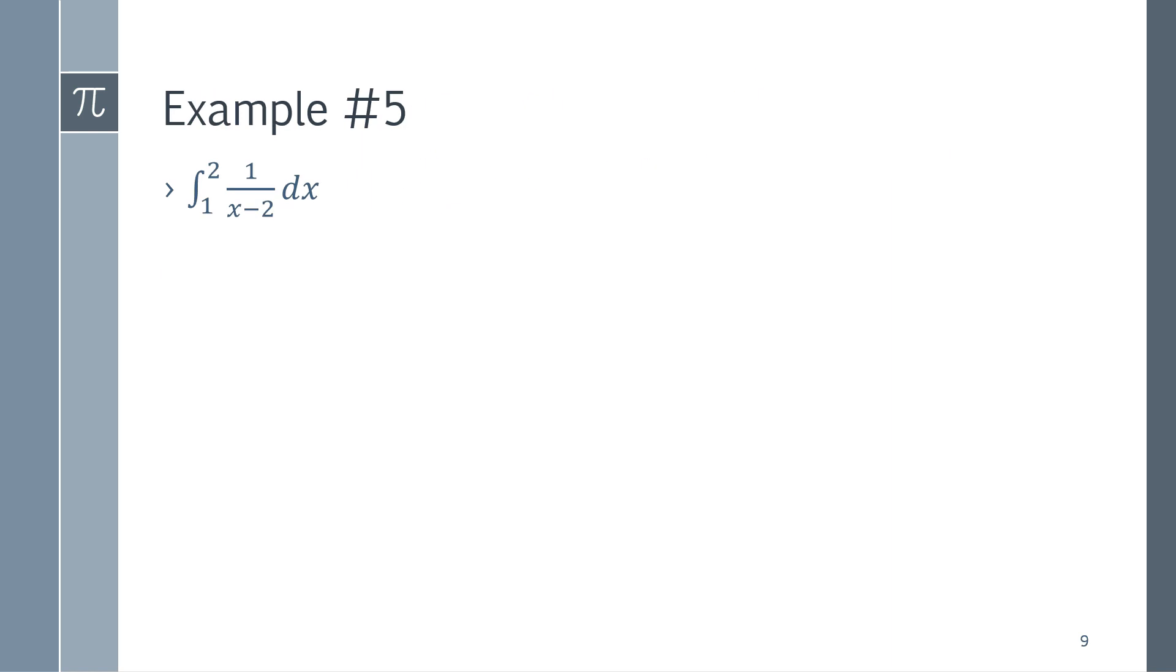If we look to see what happens if my vertical asymptote is at the upper bound, similar approach. So, here, at first glance, it seems like nothing's wrong with it, but actually what happens is I do have a vertical asymptote at x equals 2.